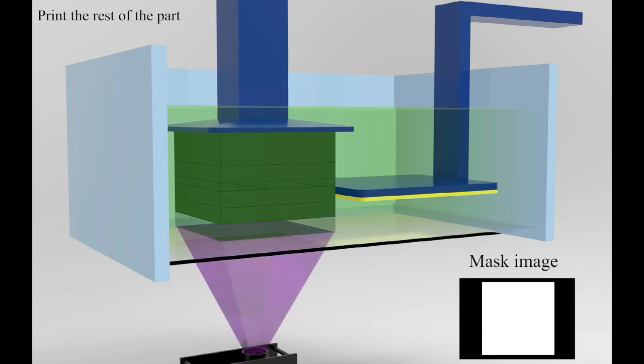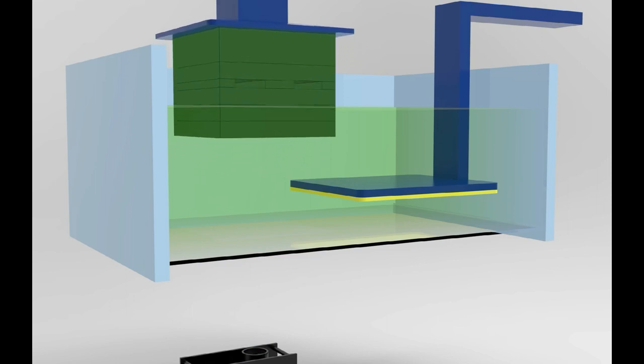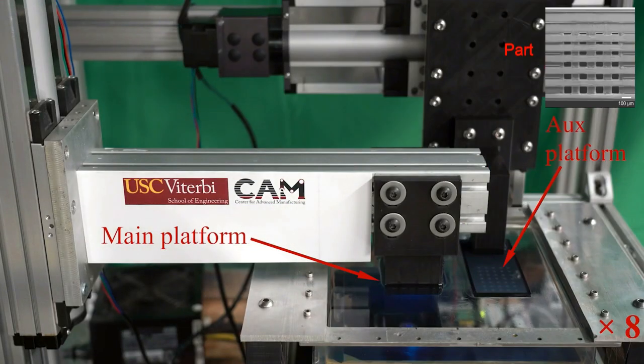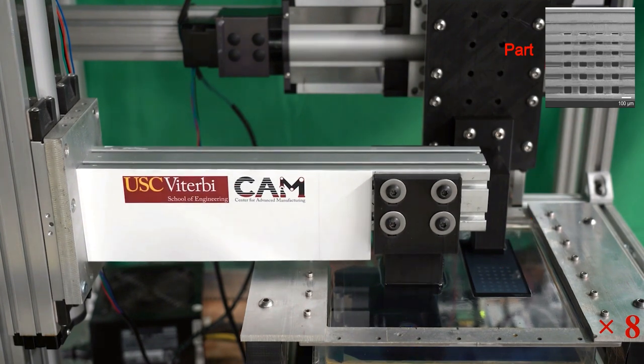The AUX platform fabricated channel roof will exponentially cut down the light dose delivered into the channel portion. Resin trapped in the microchannels remains liquid or gel state and will be washed away after fabrication.